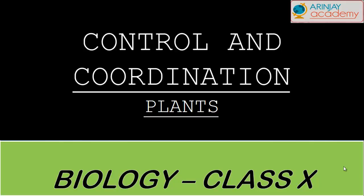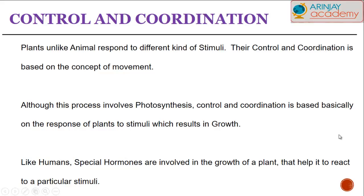Hello there again. Today we're going to look at how control and coordination takes place in plants. Plants, unlike animals, respond to different kinds of stimuli. Their control and coordination is based on the concept of movement. Plants, unlike animals, are rooted firmly to the ground and cannot move. Just like humans who have hormones secreted from their glands for a specific need, plants also have hormones within their body that help them react and respond to a particular stimulus.